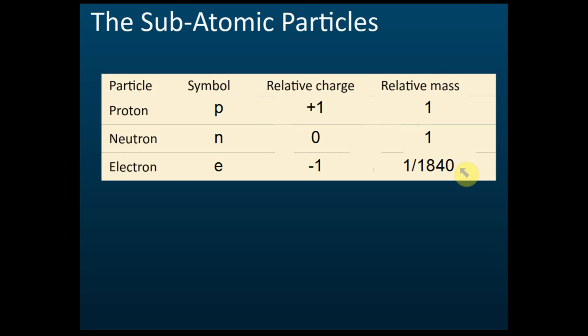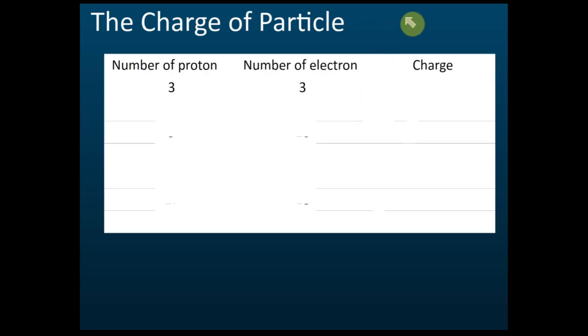The mass of the electron — one over 1840 — means that the mass of the electron is much, much smaller than the mass of neutrons and protons.